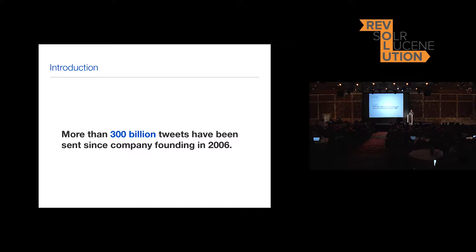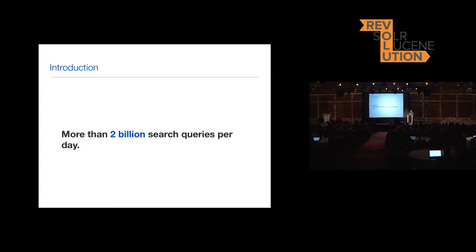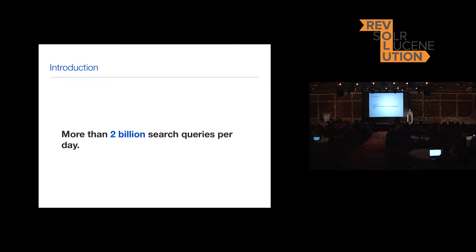In 2006 we have been getting 300 billion tweets, and recently we had a new record in terms of how many tweets were sent per second — it was astonishing, like 140,000, triggered by some TV show in Japan. Specific to search, we have more than 2 billion search queries per day, combining our apps, our website, and widgets embedded on third-party websites.